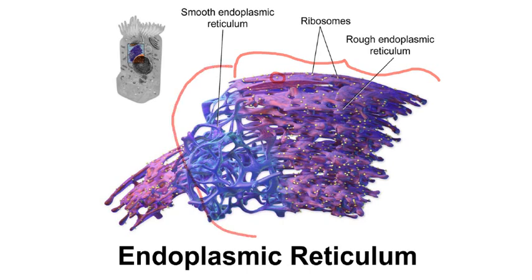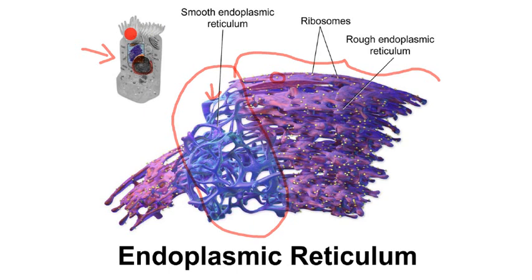The second part of the endoplasmic reticulum is called the smooth ER, and is composed of a complex network that remains to this day unclear in terms of topology, and in particular, how proteins are moving inside this structure. If we look at a general picture of a cell, where the nucleus is located here, the ER actually represents more than 50% of the membrane of the cell, and can be seen located inside the entire cytoplasm.